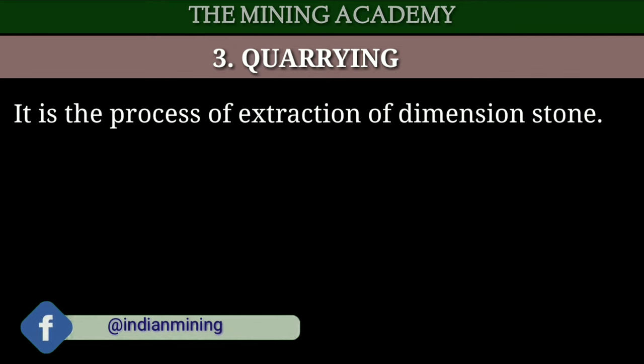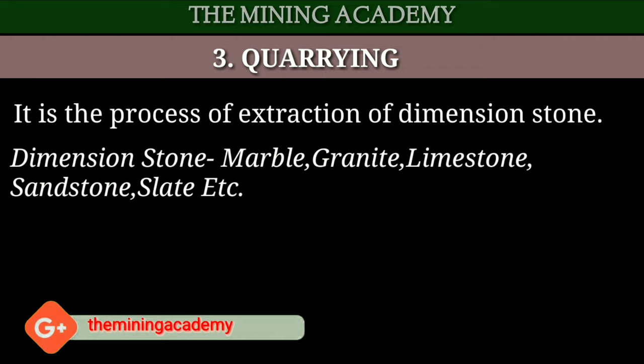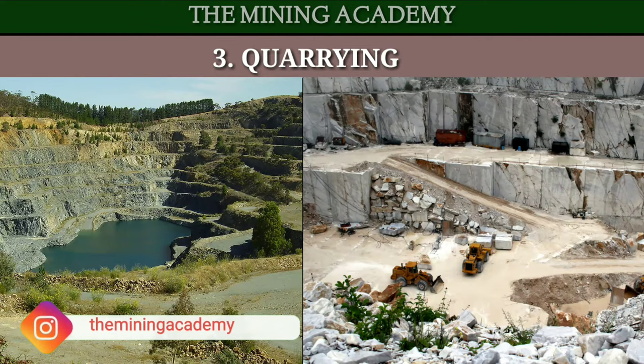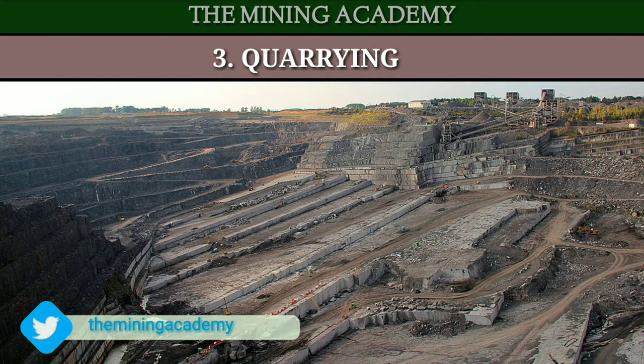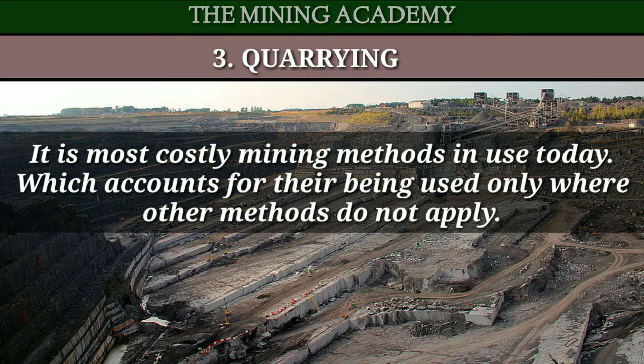Mechanical extraction method ki third method hai quarrying. Is method ka use dimension stones ko extract karne ke liye kiya jaata hai — jaise marble, granite, limestone, sandstone, shale, etc. Yah method kaafi costly hoti hai, kyonki dimension stones ke large blocks ko nikaalne ke liye normally explosive ka use nahi karte hain.